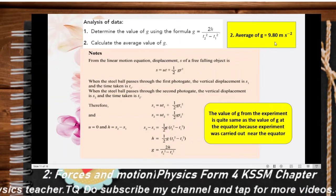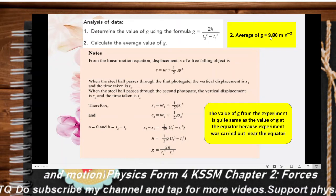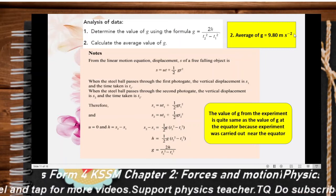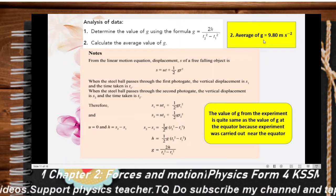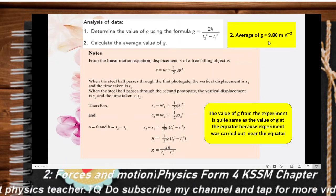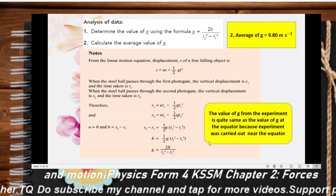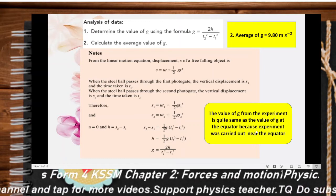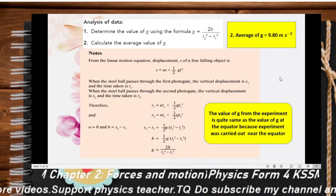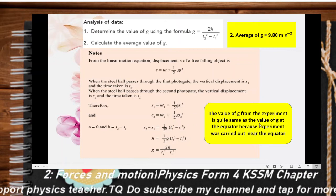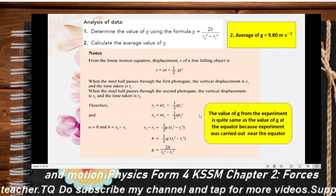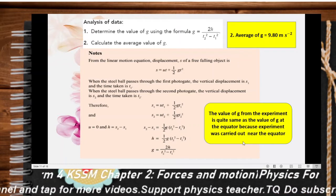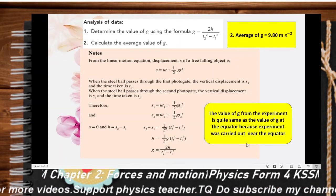From the experiment, the average value of g is 9.80 m/s², which is close to the value of g at the equator: g = 9.78 m/s². The experiment was carried out near the equator, so the values are similar. As we will discuss later, the value of g actually varies depending on position.